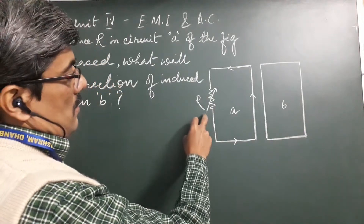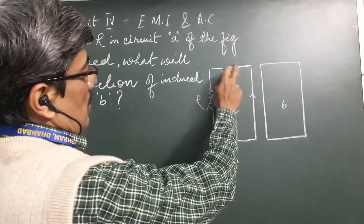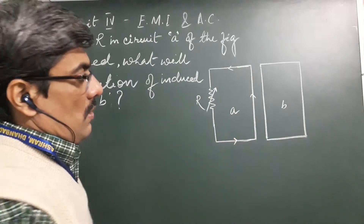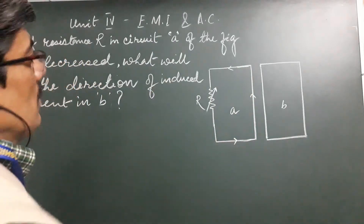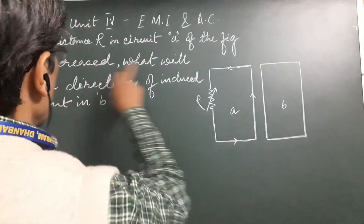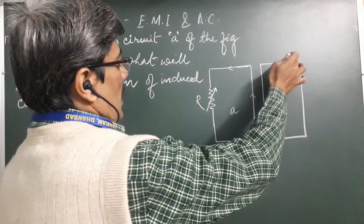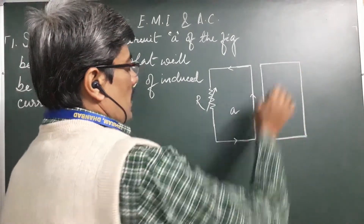As the resistance changes, the current can either be increased or decreased. According to the equation, the current is decreasing. Now, what will be the direction of current in this loop B?